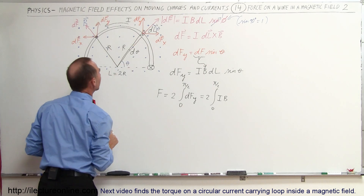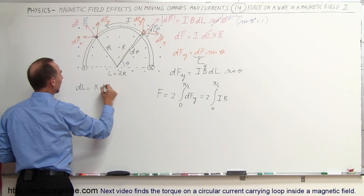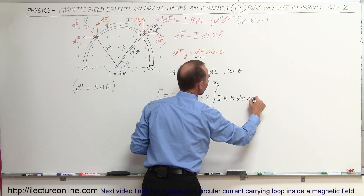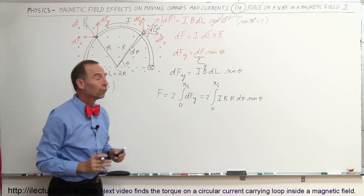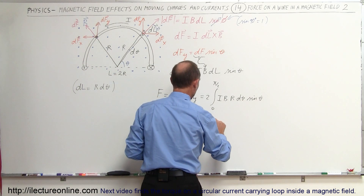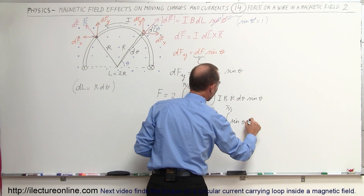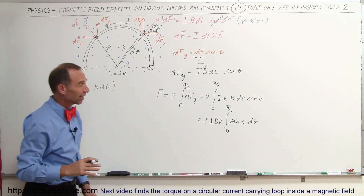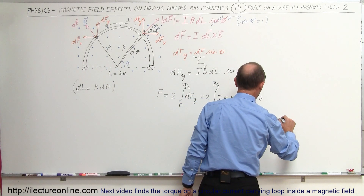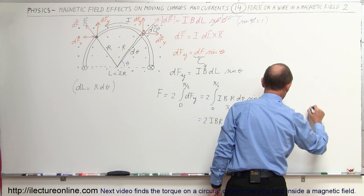Now I need an expression for DL. Notice DL, the small arc length, can be expressed as R·dθ. Substituting into the equation instead of DL, we write R·dθ times sine of theta. Since I, B, and R are all constants, they come outside the integral. This gives us 2iBR times the integral from 0 to π/2 of sin(θ) dθ. The integral of sin(θ) is negative cosine, so this equals −2iBR times cosine of θ evaluated from 0 to π/2.